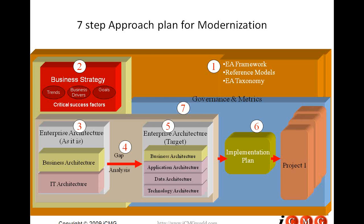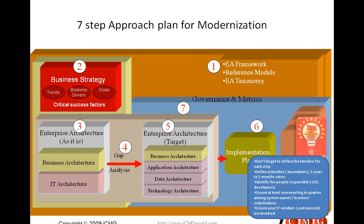When enhancing capabilities in different market segments, one very important thing to realize is: don't forget to define the timeline for each of the seven modernization steps. You must define the timeline for doing this iteratively — how quickly you think you can complete each of the steps. Define timelines and boundaries ranging from three months to three years, so that every three months you can complete the whole cycle.